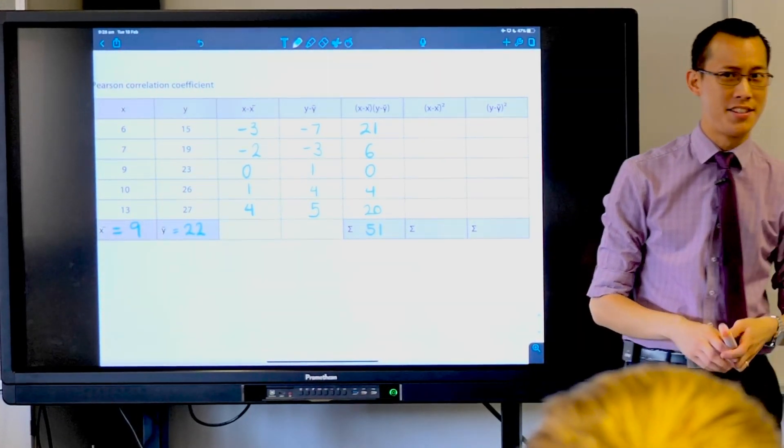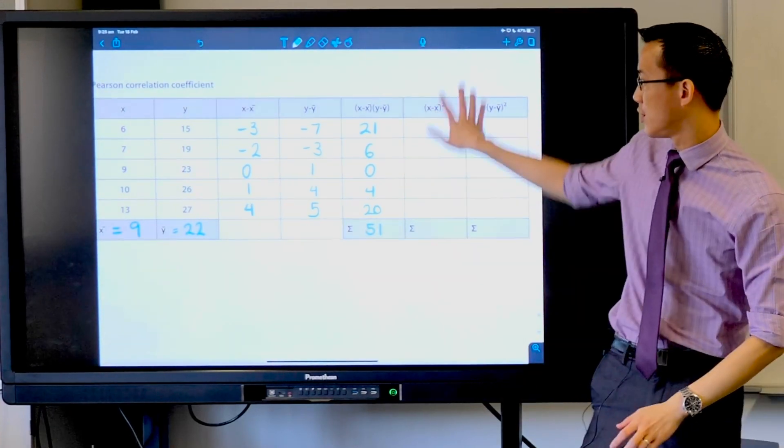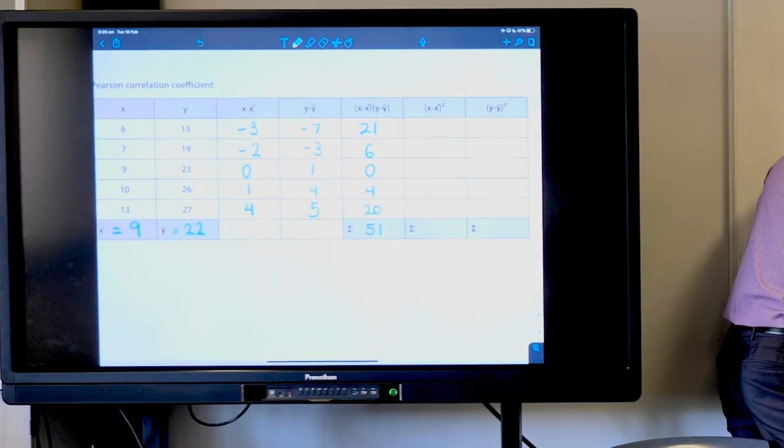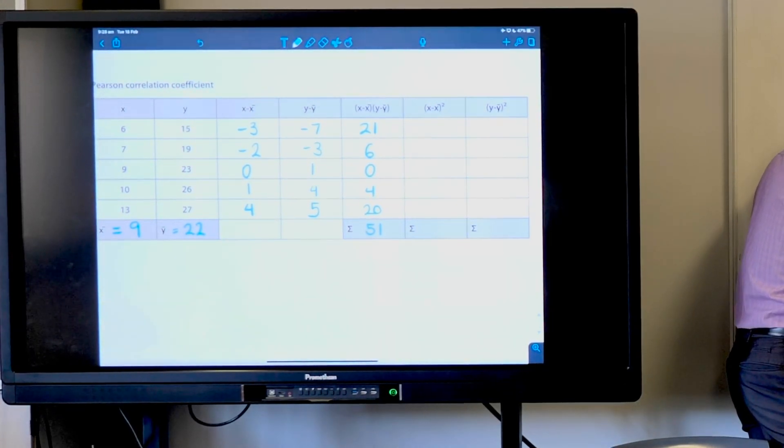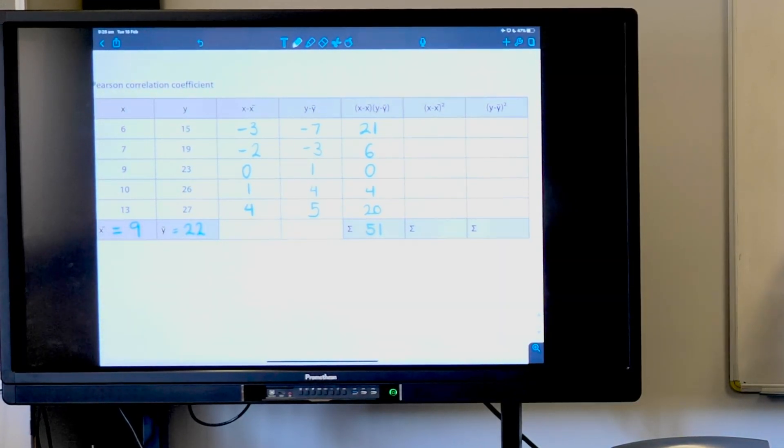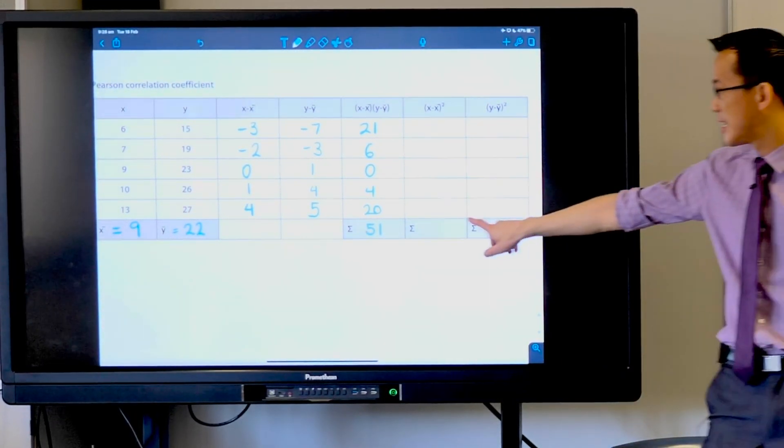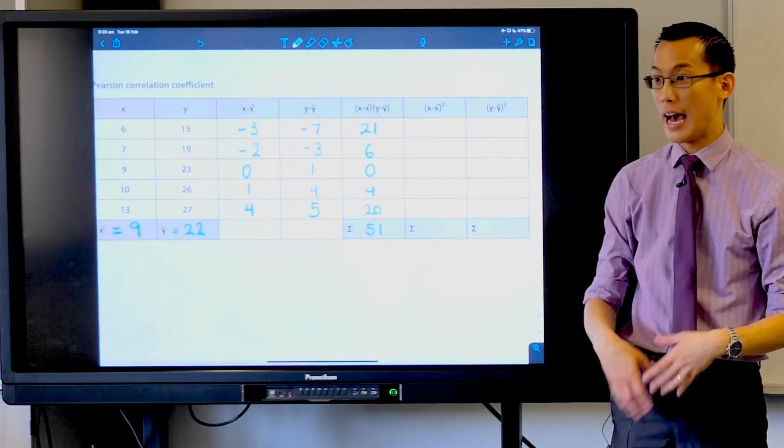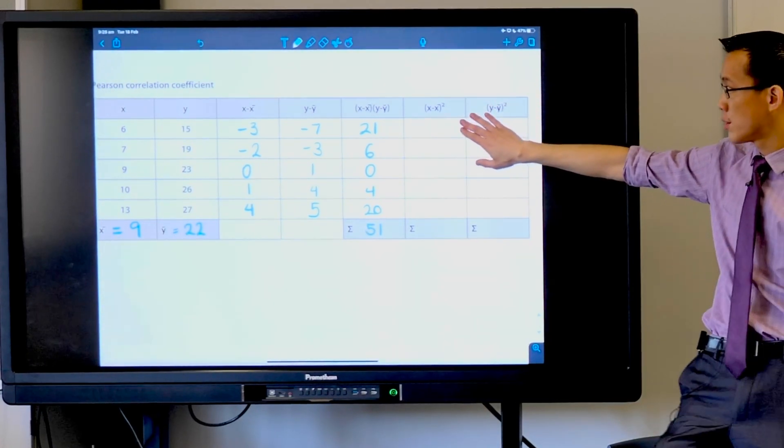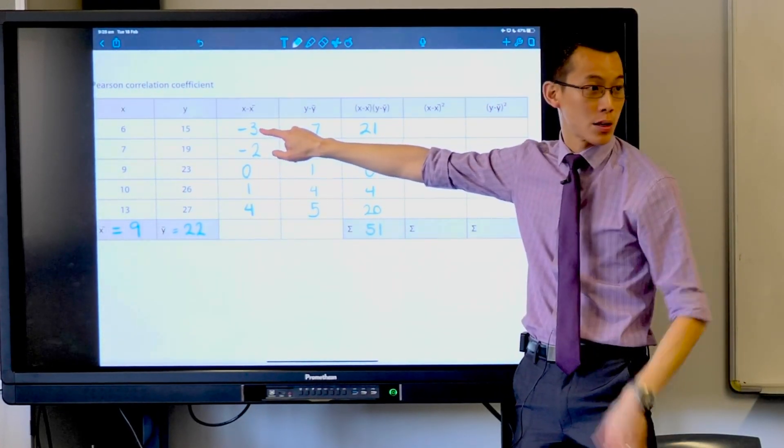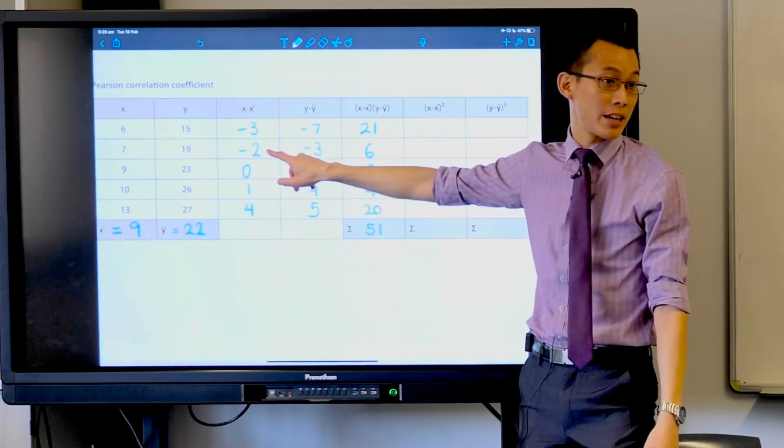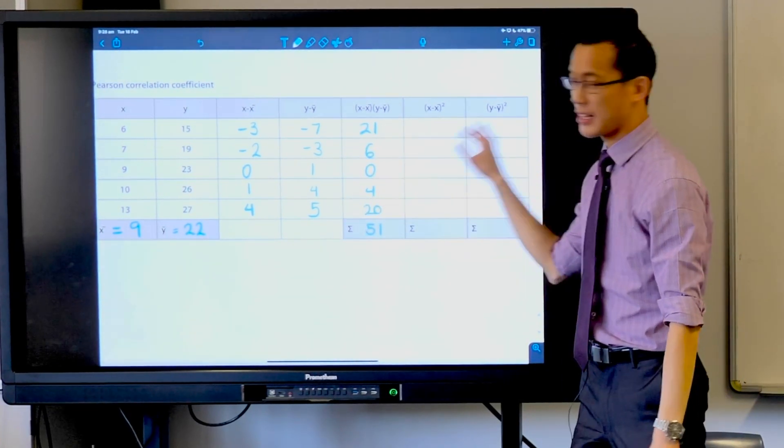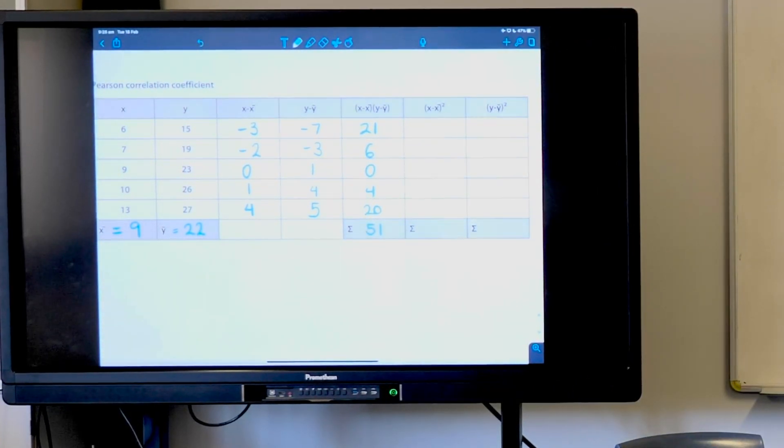We move on to the denominator, which is a bit of a mess. Thankfully, we've done most of the work. We're going to take the square root of these things all added up together: x take away x-bar squared, and then y take away y-bar squared. Can I let you guys work out what each of these values is? Take x take away x-bar, square it, and you'll get a new number. That'll fill in this second-last column. Then square all the y values for the last column.